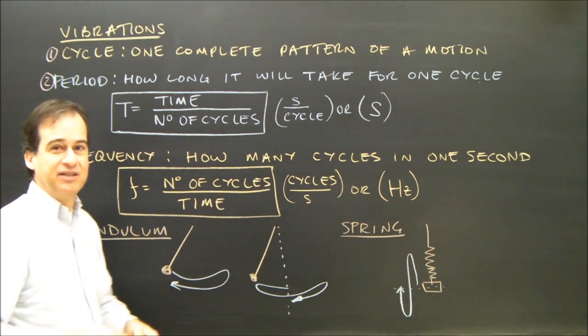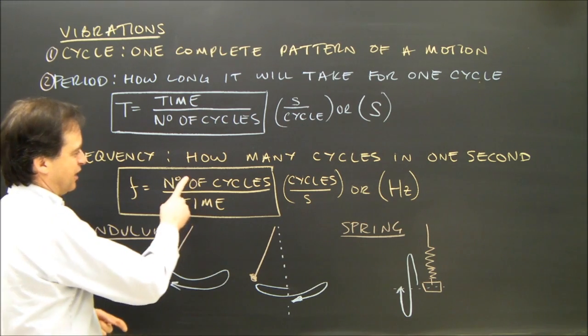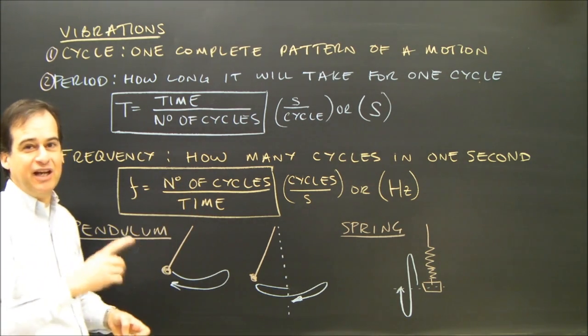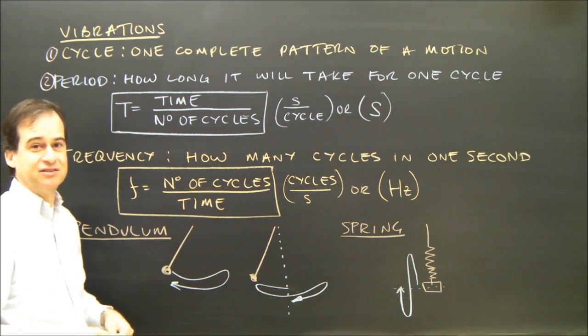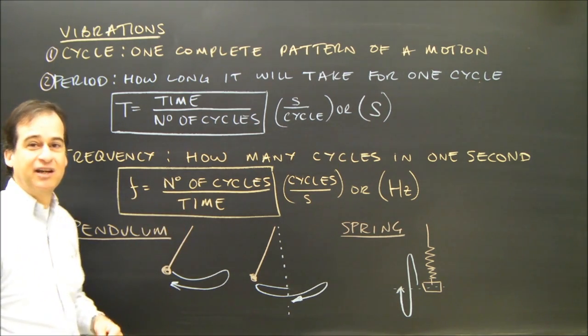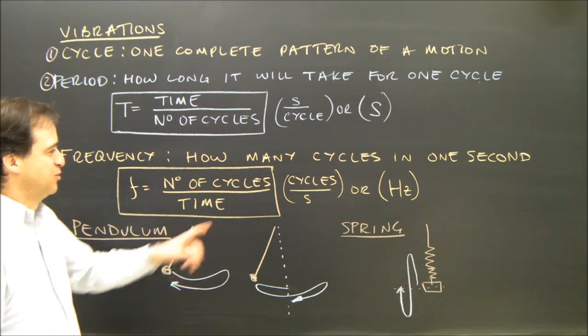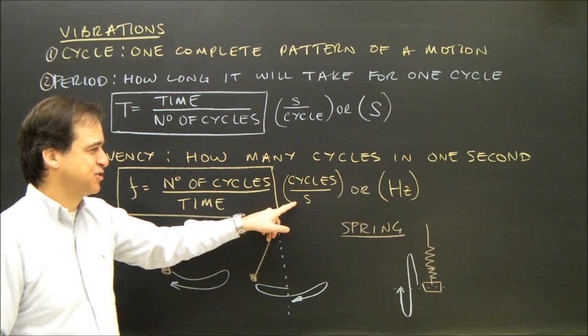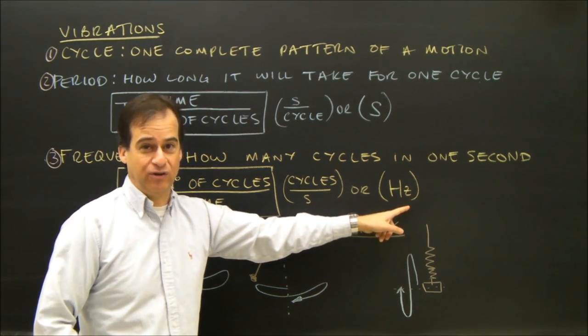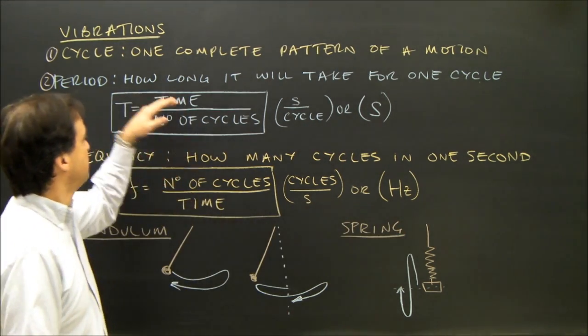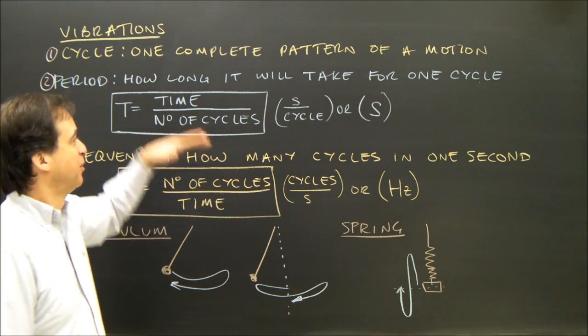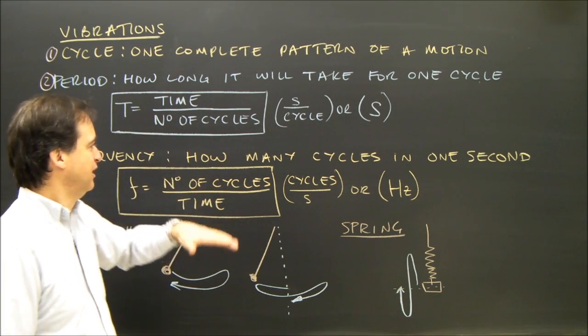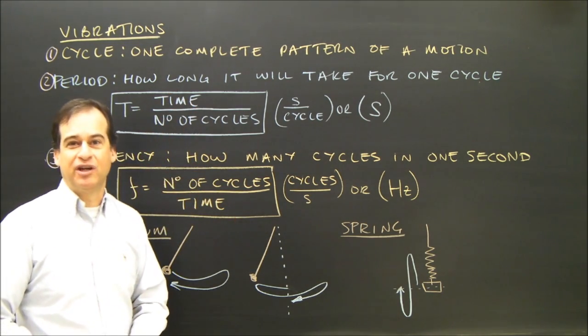The number of cycles I did in my example with the pendulum was five cycles, and the time it took was ten seconds. So, if I take five divided by ten, I get 0.5. It's 0.5 cycles per second, but we use the unit hertz. We've got period and frequency. Period is how long it will take for one cycle, and frequency is how many cycles you get in one second.